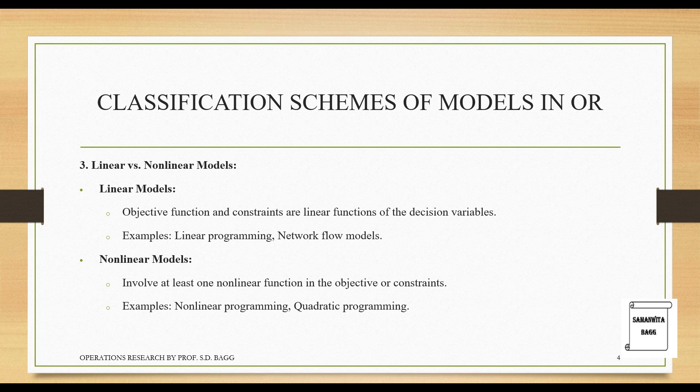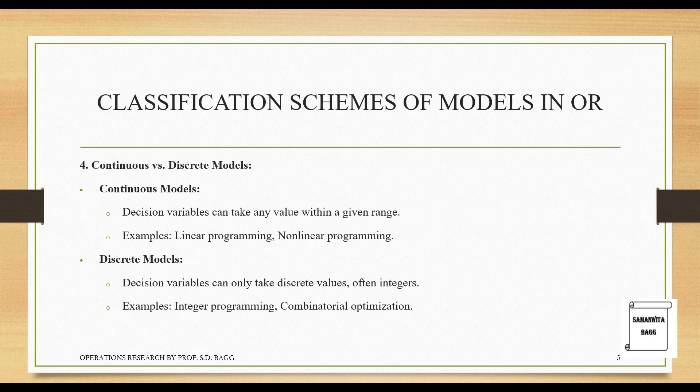Continuous versus discrete models: in continuous models, decision variables can take any value within a given range. Examples include linear programming and non-linear programming. In discrete models, decision variables can only take discrete values, often integers. Examples are integer programming and combinatorial optimization.